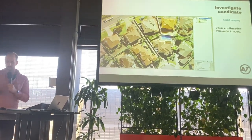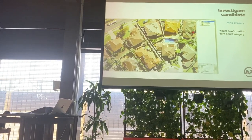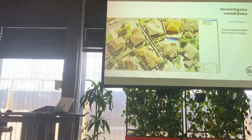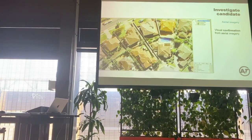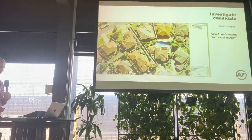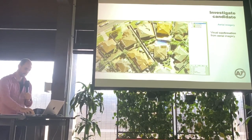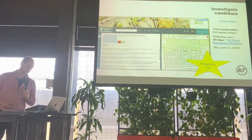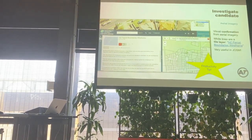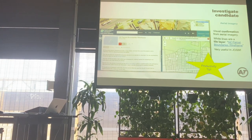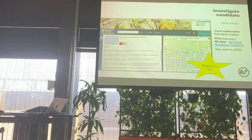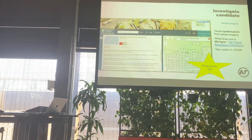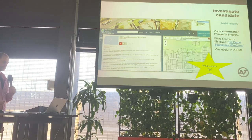I also do a visual check just to confirm it looks like how I'd expect a pathway to look. Those white boundaries you see are parcel boundaries — our friends at LINZ have published a great wireframe raster service, which is useful for cartographic purposes and really helpful for OSM editing. I always have it as a layer in my JOSM layers to refer to.